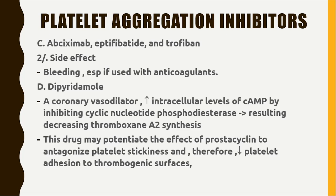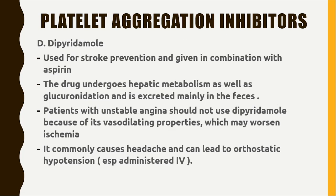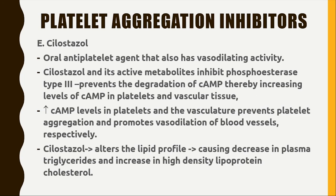Dipyridamole is used for stroke prevention, given in combination with aspirin. It undergoes hepatic metabolism including glucuronidation and is excreted mainly in the feces. Patients with unstable angina should not use dipyridamole because of its vasodilating properties, which may worsen ischemia. Dipyridamole can cause headache and hypotension.